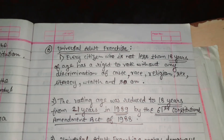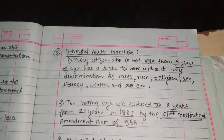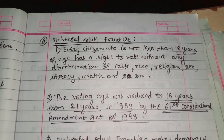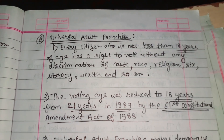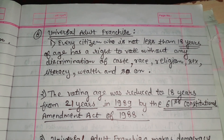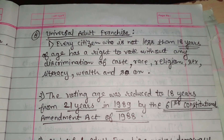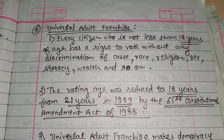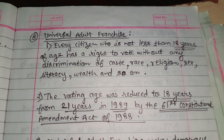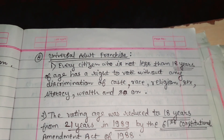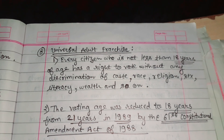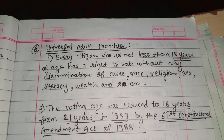The last feature is universal adult franchise. Every citizen who is not less than 18 years of age has a right to vote without any discrimination of caste, race, religion, sex, literacy, wealth, and so on.